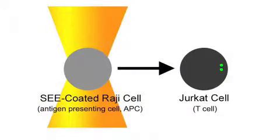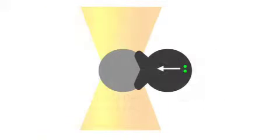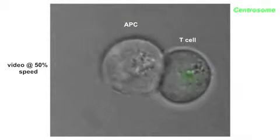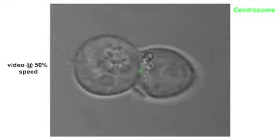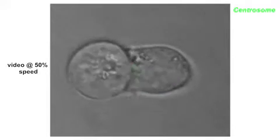The real key to getting the project going was to build an optical trap on a spinning disk microscope so they could control temporally and spatially the presentation of the target cell to the T cell. They could bring the target cell always 180 degrees opposite from the position of the centrosome, allowing them to watch from the moment of initial contact between the two cells the whole dynamic process of centrosome repositioning.